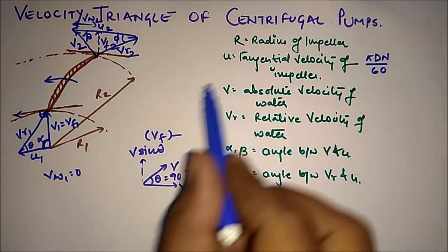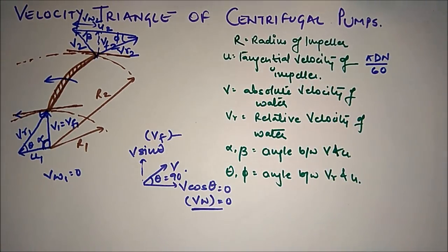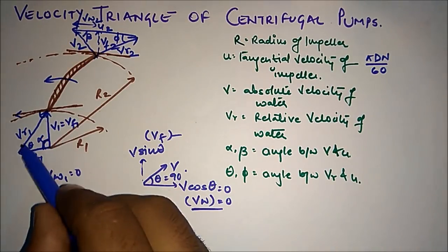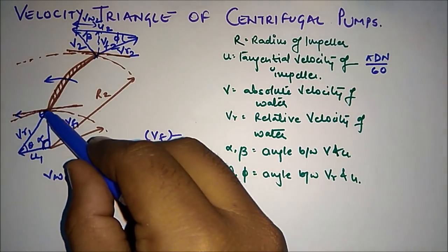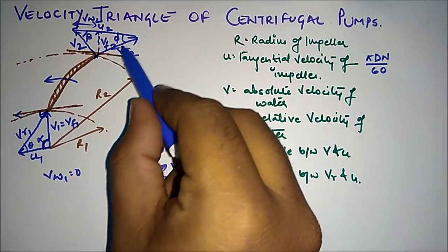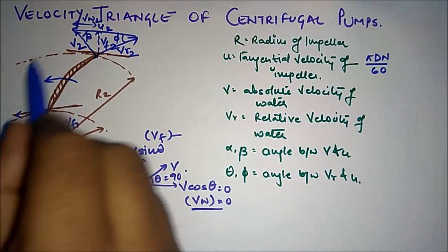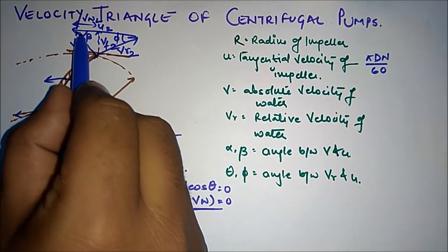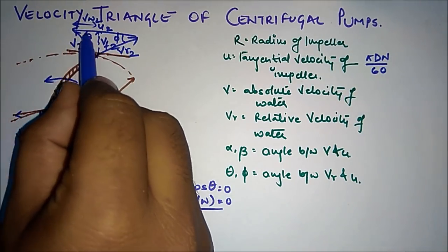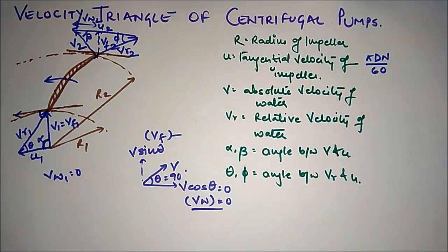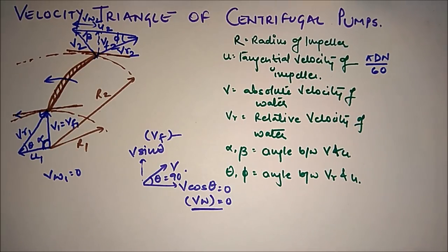Due to the blade velocity, the tangential velocity is in this direction, which is U1. As it enters with this velocity, it exits with the relative velocity Vr2 at the outlet. The tangential velocity U2 is in this direction, and completing the triangle gives the absolute velocity V2. This is the basic concept of how to draw the velocity triangle of a centrifugal pump.